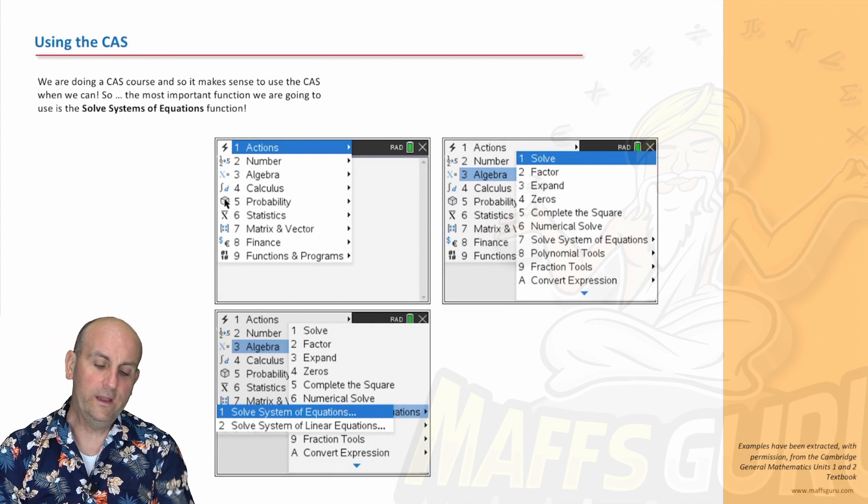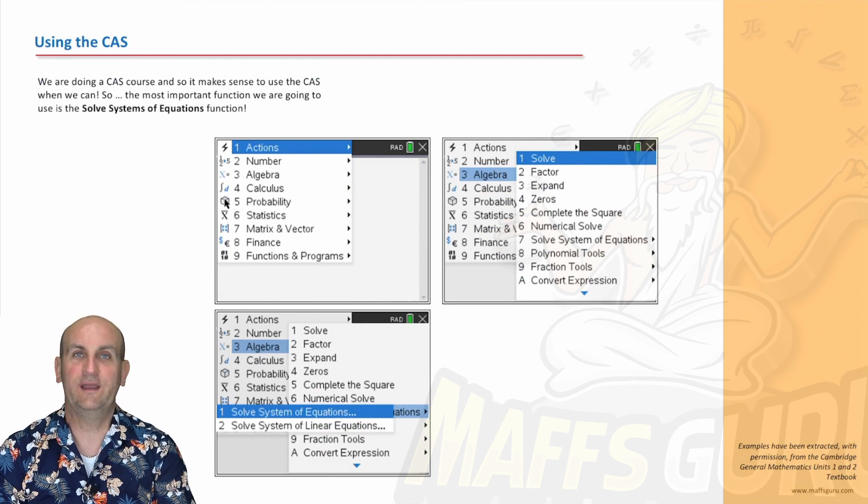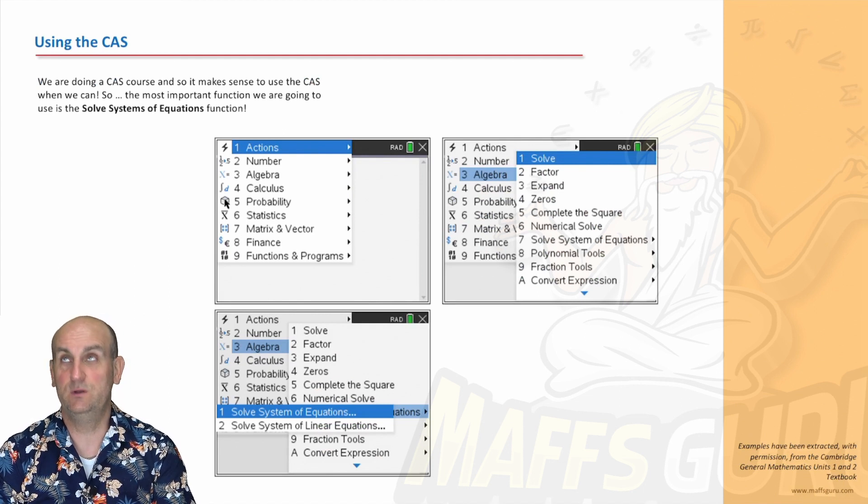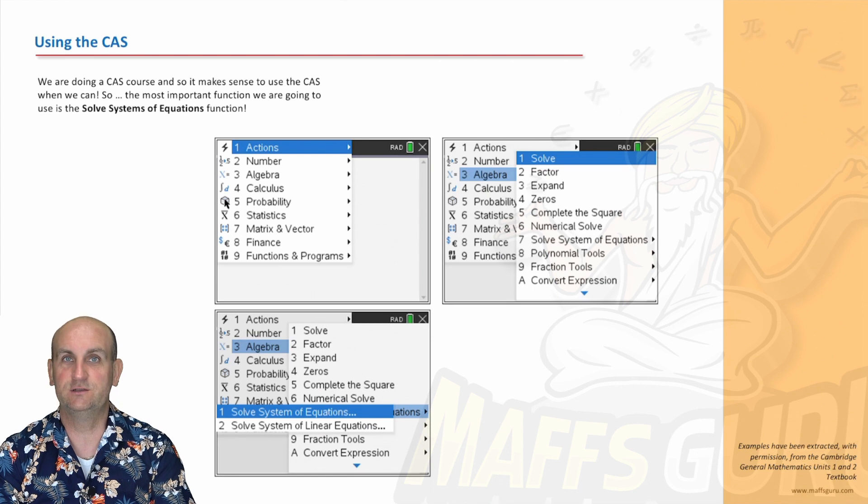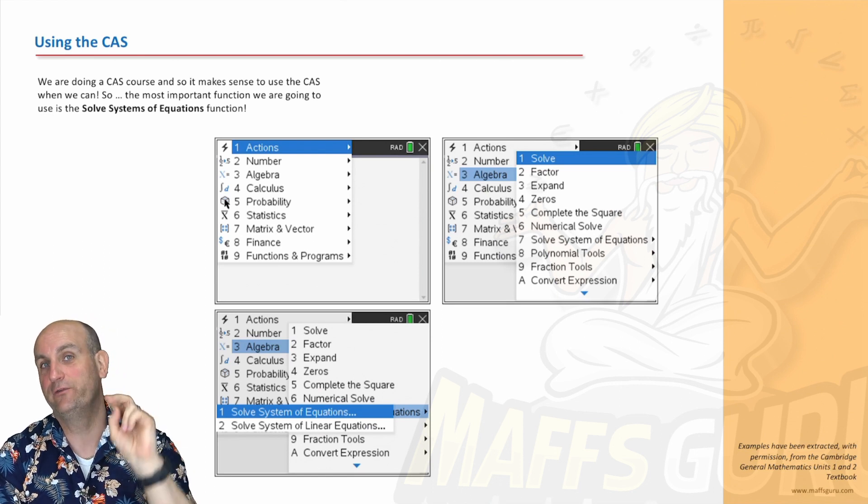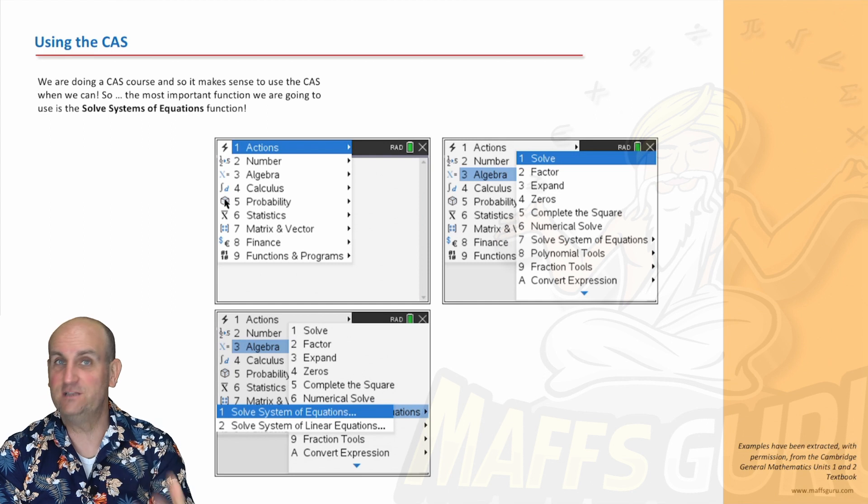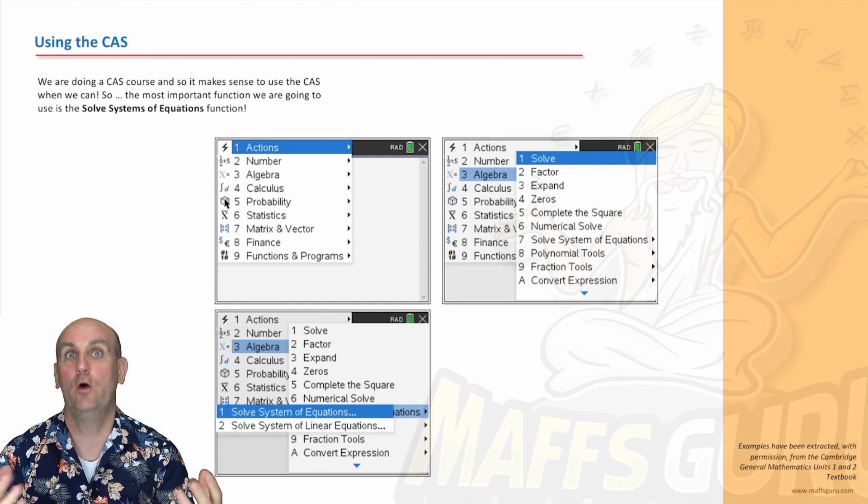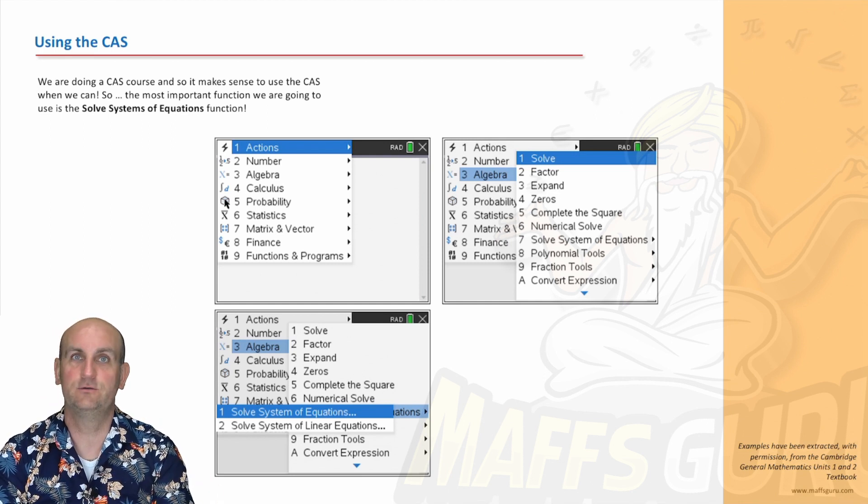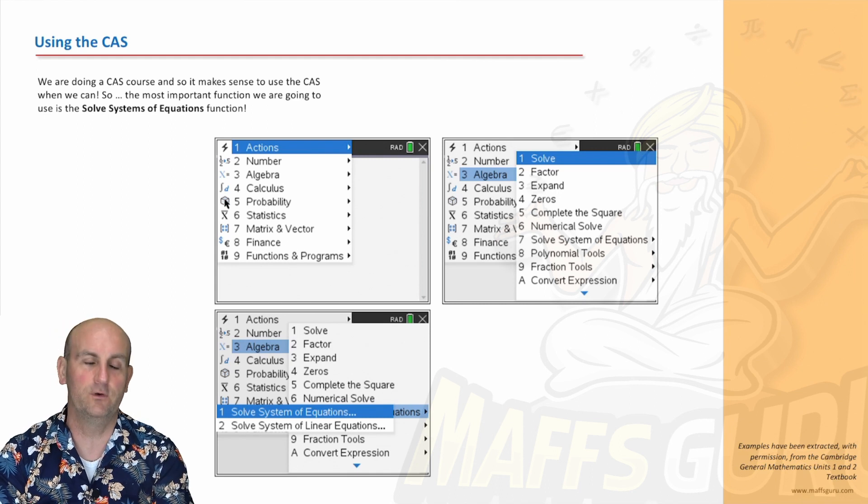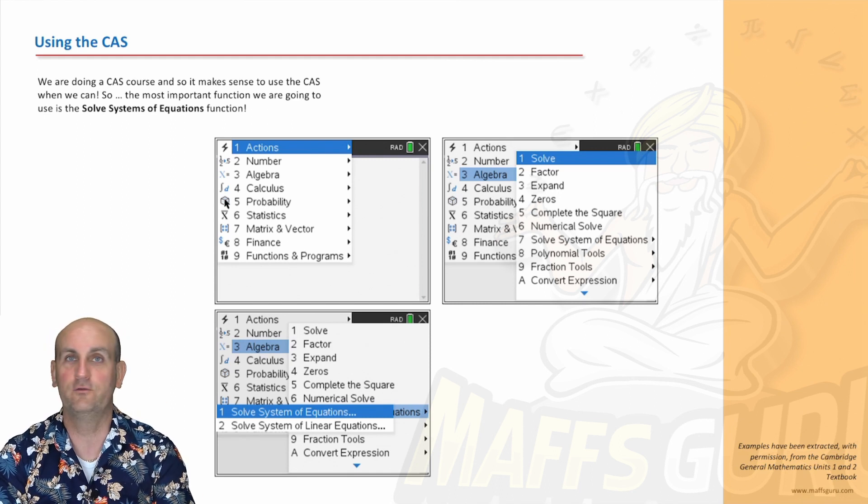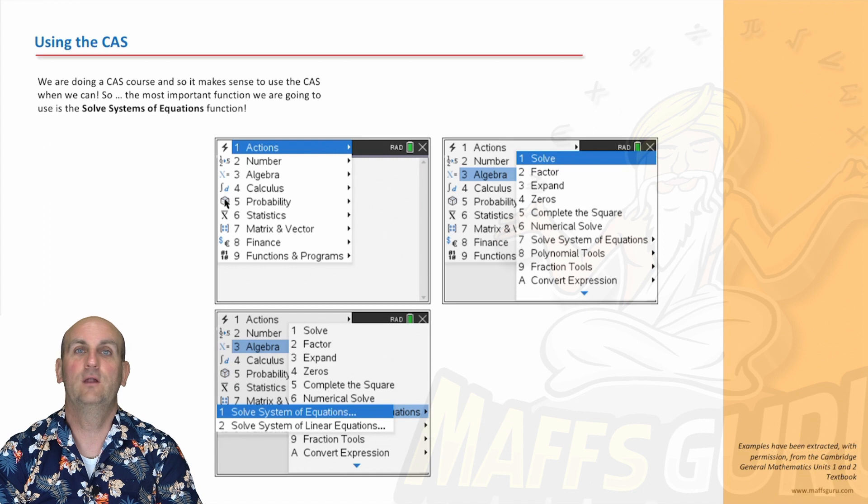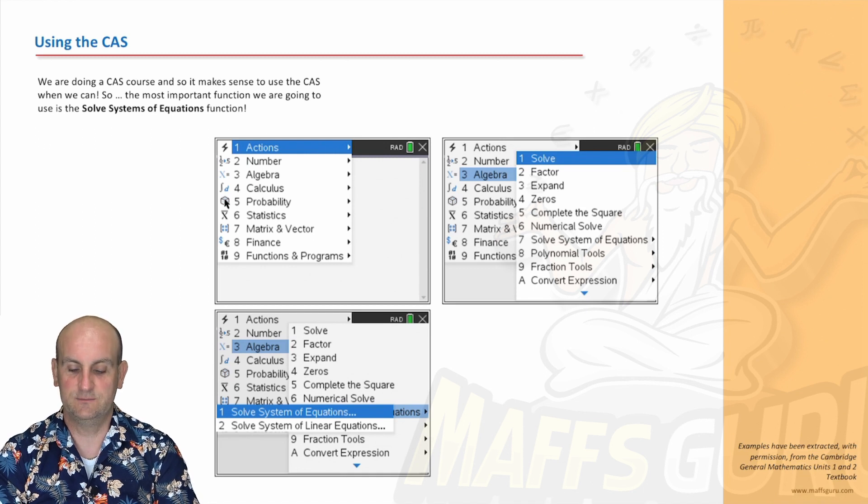When you use your CAS, you're going to solve a system of equations. Wouldn't it be nice if they actually said simultaneous equations? Well, simultaneous equations means there's just two of them. But imagine if we could solve lots of equations. And in fact, you can. Later on, you're going to be solving three equations and four equations. And if you're doing methods or any of those other subjects, then you'll absolutely be solving systems of equations.